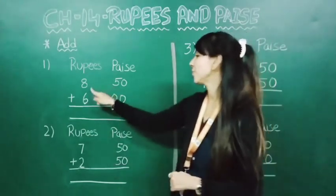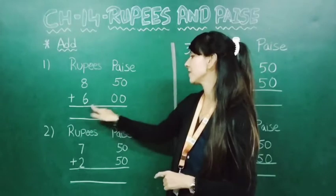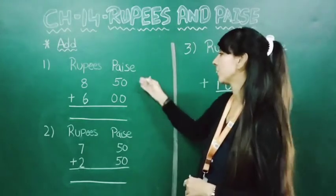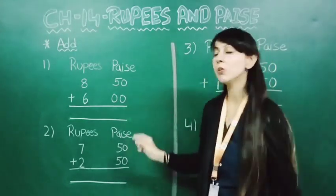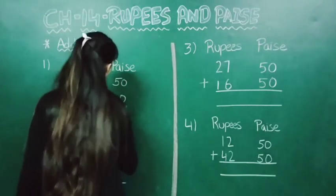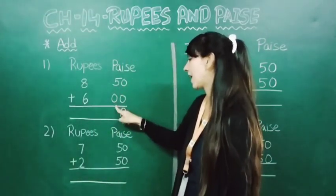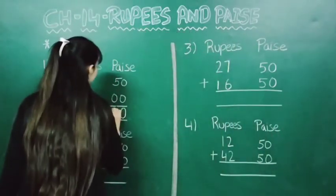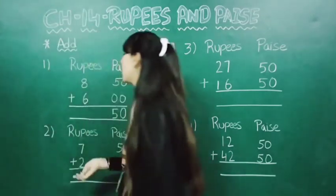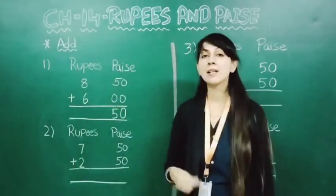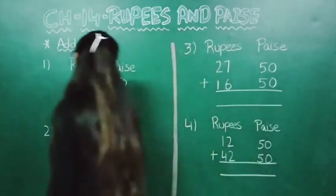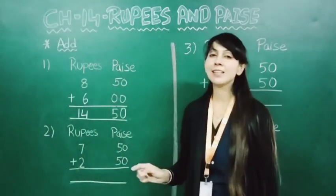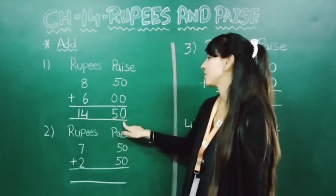Let's see: 8 rupees 50 paise plus 6 rupees. As we are starting from the right side, in paise it is written 0 and 0, so here it will come 0 only. Here it is written 5 and down you can see 0, so here it will come 5 only. Now 8 plus 6 is 14, so here we will write 14. Now you can see the answer is 14 rupees 50 paise.